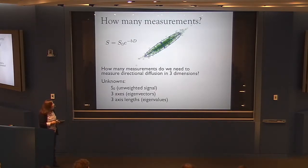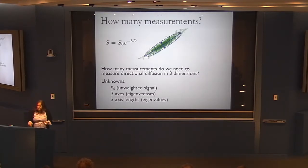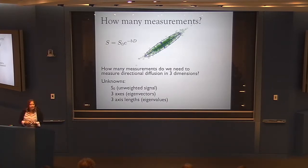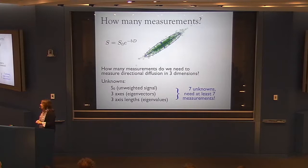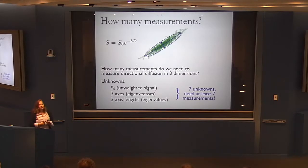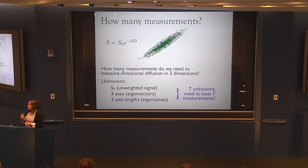How many measurements do we need? If we want to fit a tensor, we have seven unknowns — S0 plus three axes and three lengths of those axes — so we need at least seven measurements. That said, acquiring only seven is never recommended because it makes you extremely susceptible to noise. In practice, what we do is acquire a series of images each weighted along a different direction, plus an unweighted image, then combine them with a model to extract properties.